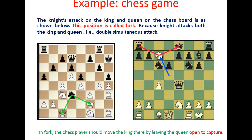The knight's attack on the king and queen on the chessboard is as shown below. This position is called a fork because the knight attacks both the king and queen — that is a double simultaneous attack. In a fork, the chess player should move the king, thereby leaving the queen open to capture. That is the rule in the fork.